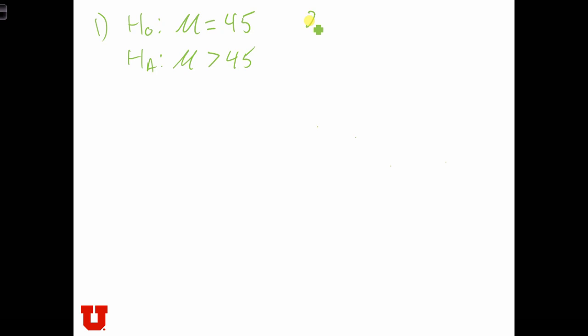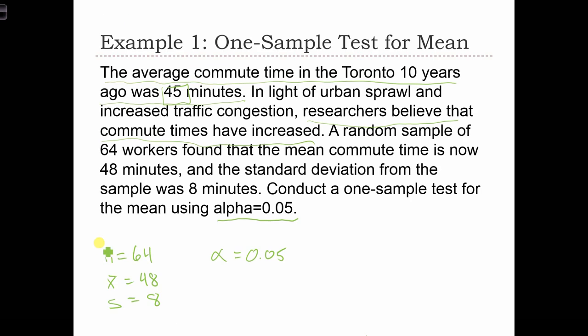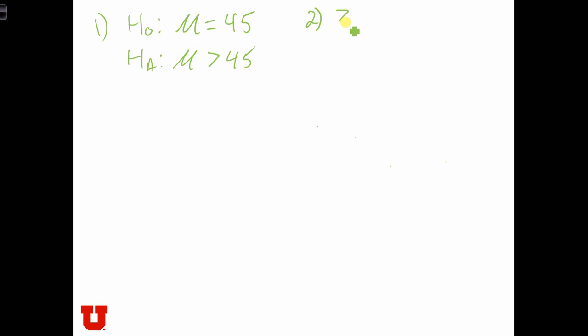Step two is to choose the test statistic. Our sample size is large. N equals 64. And therefore, we're going to use the Z test for one sample difference of means.